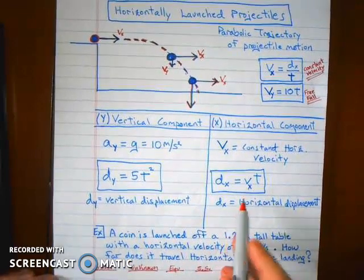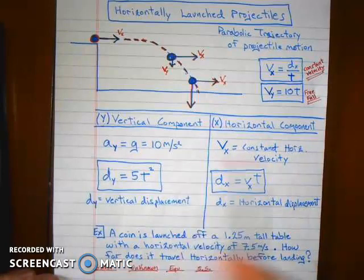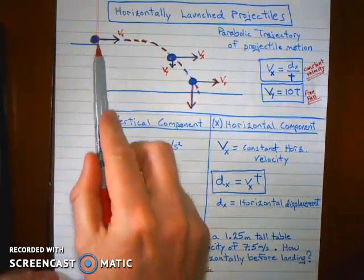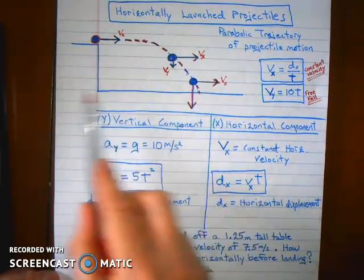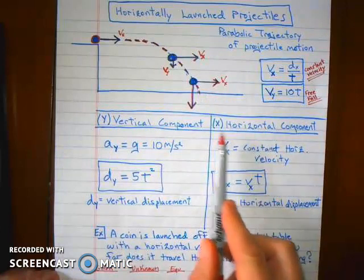Now, if you want to look at the vertical and horizontal components of its displacement, you can tell, just looking at the diagram, the object falls a vertical distance and it travels a horizontal distance. So we'll call the vertical component the y component, the horizontal component, the x component.